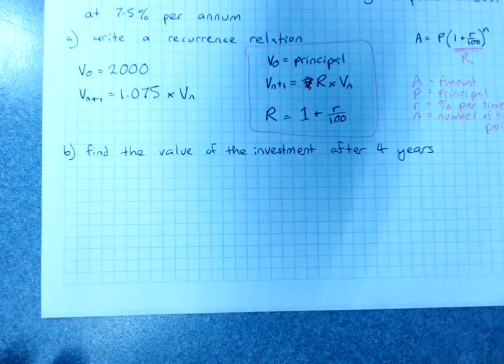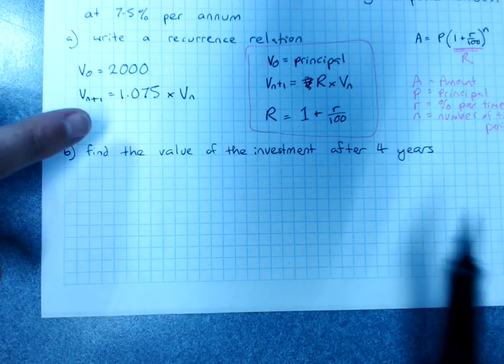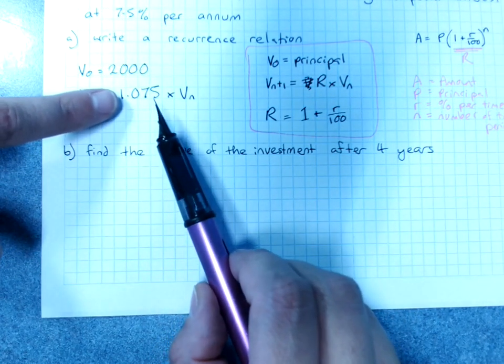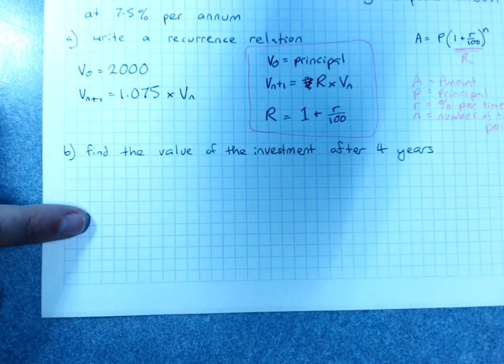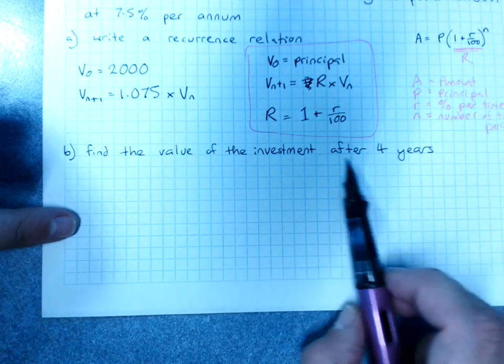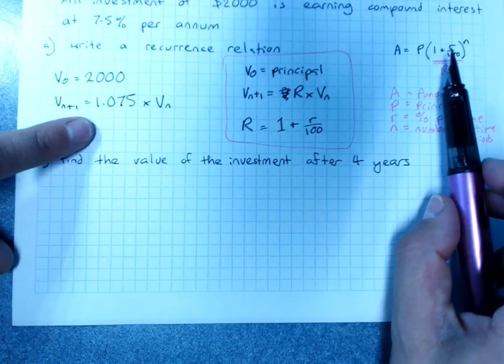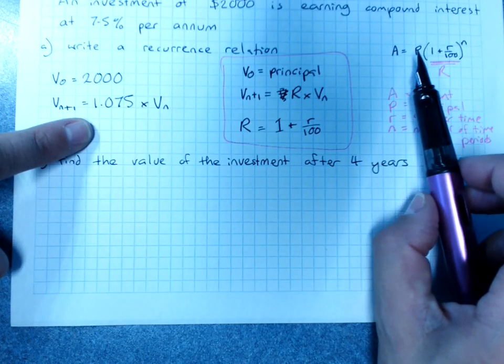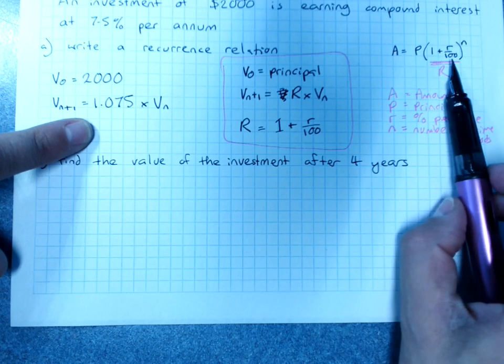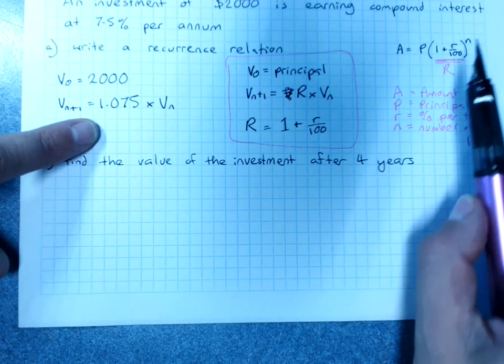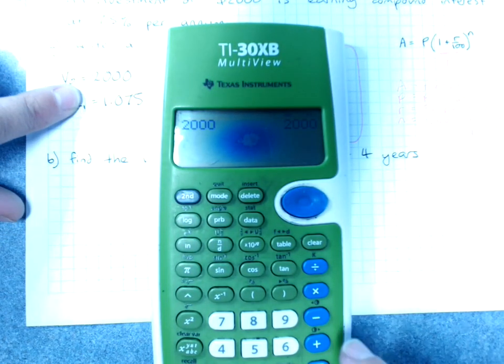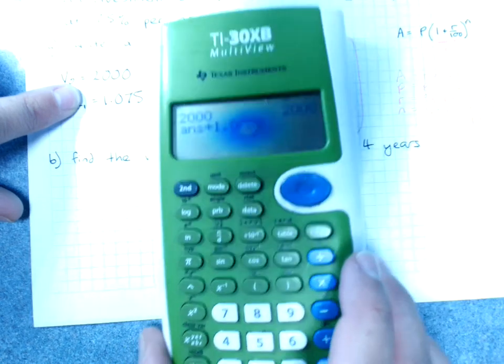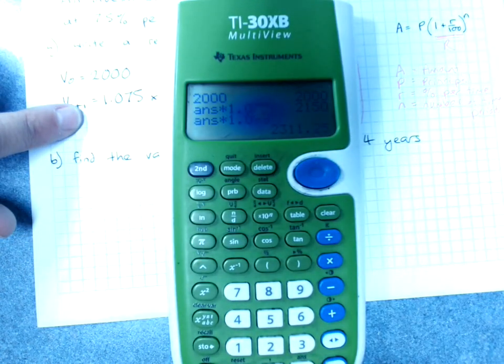Find the value of the investment after 4 years. We're just going to need to multiply by 1.075 four times. And if we're feeling very clever, we'd know that we could raise that to the power of 4. That's why this formula works. The starting amount multiplied by the common ratio to the power of the number of years we've got. 2000, hit enter, times 1.075. Year 1, year 2, year 3, year 4. That's it.